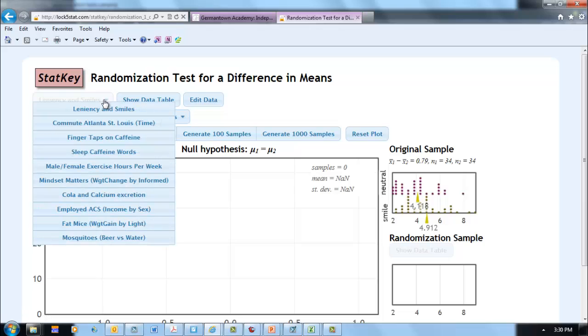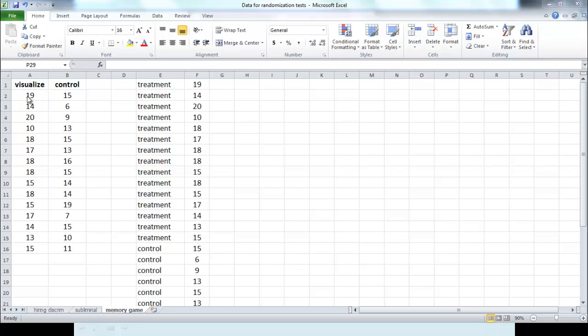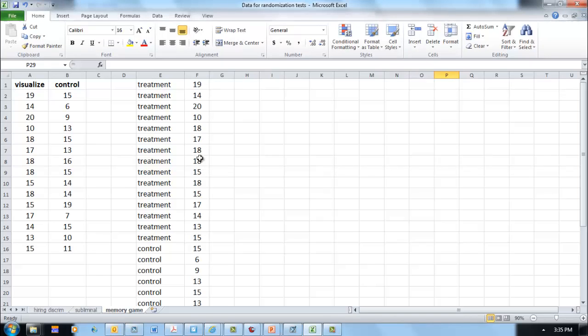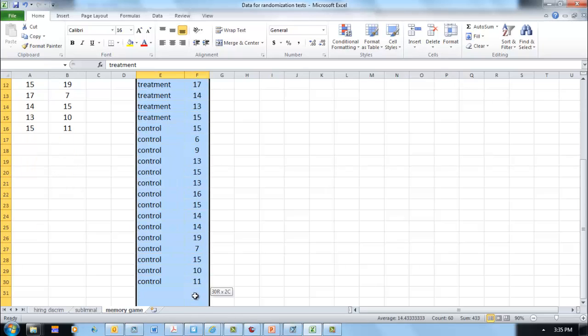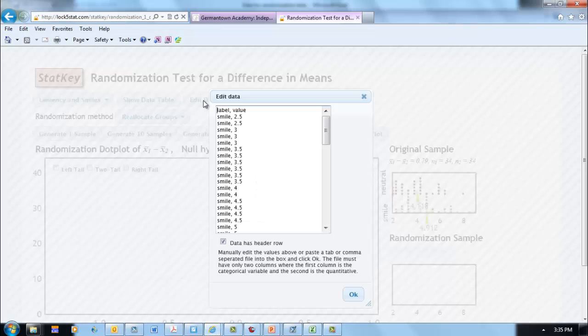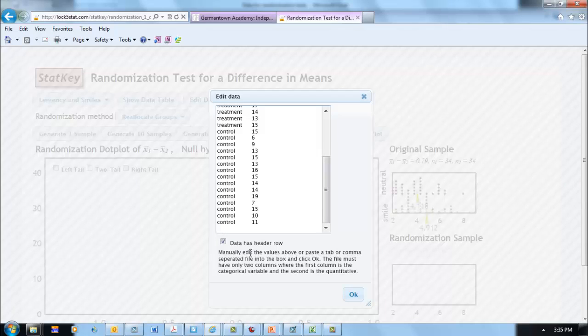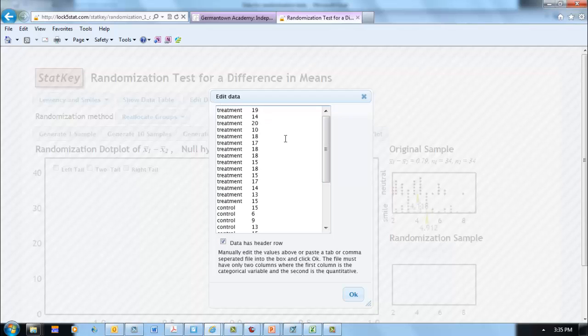Now you'll notice over here that there's many built-in data sets, but we want to put our own data set in. I have my data in Excel in two columns, the treatment column and the control column. In order to put it into StatKey, it needs to be in the format label comma value. So I reorganized it here, and I'm just going to copy my data, and then go back into StatKey, and I'll click here on Edit Data. Notice label comma value. I'll delete the data that's in there now and just paste mine. Notice here at the bottom it says data has header row. My data doesn't have a label name, so I'm just going to deselect that and then say OK.